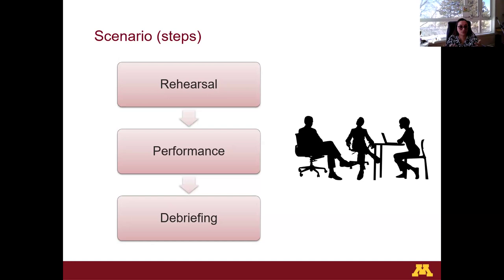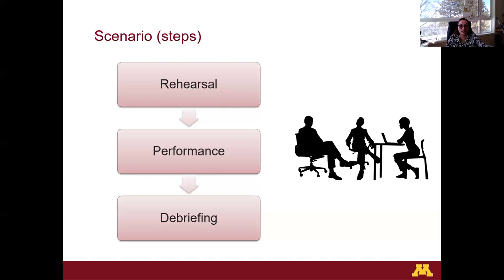The process of executing a scenario involves several key steps. First, the rehearsal phase, where participants familiarize themselves with the context of the provided situation, the objectives of the communication, and their role — because they do not know the other person's role. Next comes the performance stage, where the scenario is enacted and participants get the full picture of the situation, realizing they have a communicative goal slightly different from what they may have expected. Finally, the debriefing phase, typically used in classroom settings, where strengths and weaknesses are openly discussed to improve future performances.